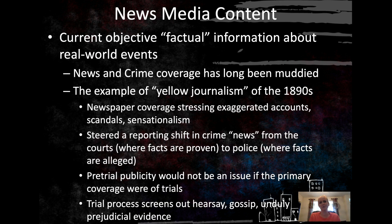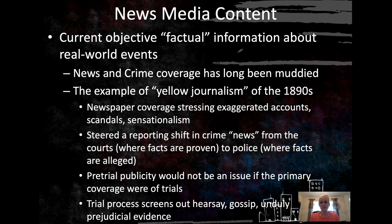That segues into news media content. Our current objective is really obtaining factual information about real-world events, and by and large the news media accomplish this. How they do this with crime and justice is a different story we're going to tell in this class. News and crime coverage has long been muddied — it's not always clear. We have a big example of yellow journalism in the 1890s, essentially newspaper coverage stressing exaggerated accounts of real events, scandals, and high sensationalism, with a real veering away from the truth. Yellow journalism was meant to sell papers and get people to subscribe, but it wasn't accurate.